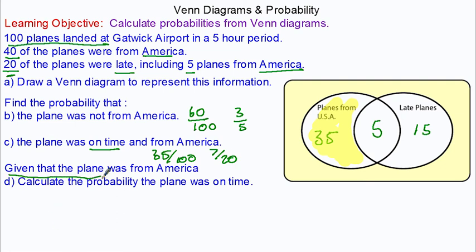Given that the plane was from America—and there were 40 planes that were—find the probability the plane was on time, which means it was not late. That is 35 out of 40, and that simplifies to seven-eighths.